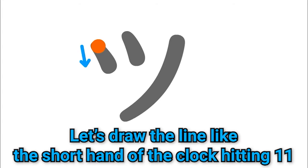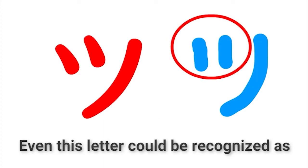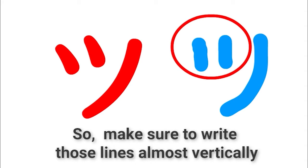Next is tsu. 1. Let's draw the line like the short hand of the clock hitting 11 o'clock. Stop! 2. Stop! 3. Fade stroke. Even this letter could be recognized as katakana tsu, so make sure to write those lines almost vertically.